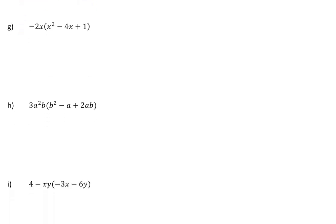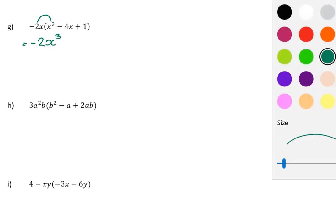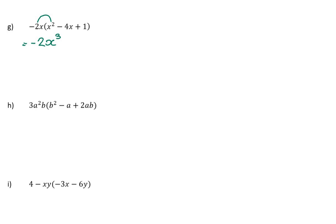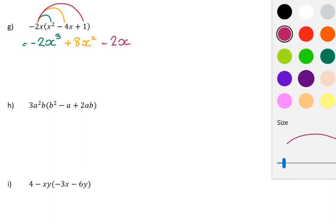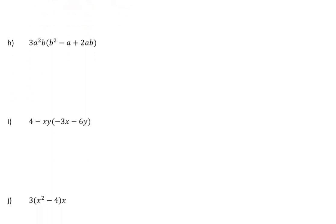Now let's start to get a little bit more interesting — there are three terms in the bracket. Not a problem at all, because it's negative 2x times x squared, which is negative 2. x times x squared: add exponents. It doesn't matter if there are 100 terms in the bracket — I just keep distributing. A negative times a negative is a positive. 2 times 4 is 8, and x times x is x squared. And then finally, negative 2x times 1 — anything times 1 just remains itself. That's not like terms because while they have the same letter, they don't have the same exponent.